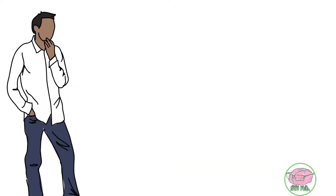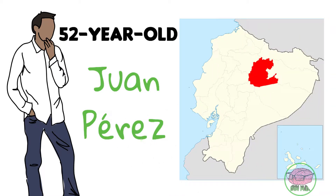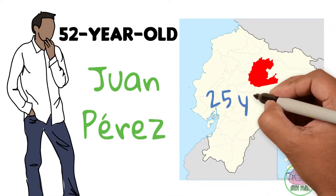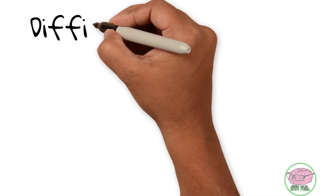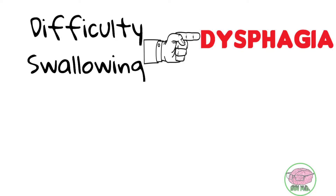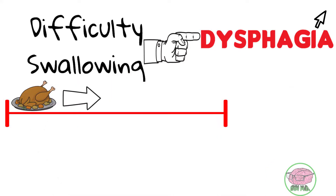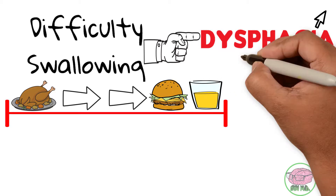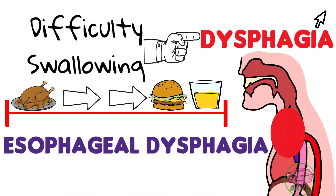In the previous video, we talked about a 52-year-old male Ecuadorian patient who lived in the Ecuadorian jungle until he was 25 years of age. The patient's chief complaint is difficulty swallowing, known as dysphagia. The important features of this patient's dysphagia — a progression from solid to solid and liquid foods, as well as chest pain — point us towards an esophageal dysphagia.